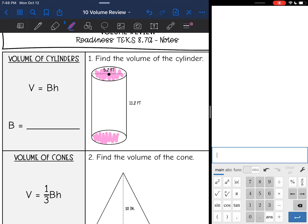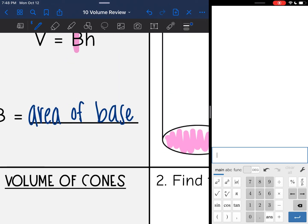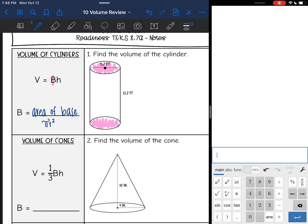Our formula is V equals BH and that B means area of the base. And since our base is a circle, we use pi r squared to find the area of it.